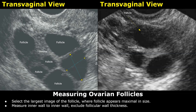First, we identify the follicle we want to measure and carefully scan through it in both planes. We scroll or sweep slowly until the follicle appears at its maximum size. This is the frame where the follicle looks largest and most well-defined. It is important not to measure the first image we see, because follicles are three-dimensional structures and measuring them off-axis will underestimate their true size. Once the follicle appears largest on the screen, we freeze the image.